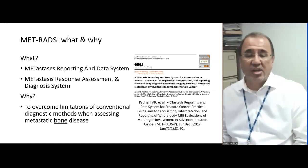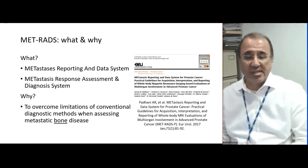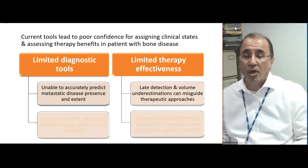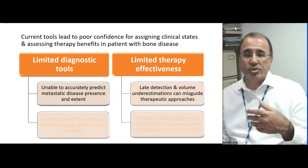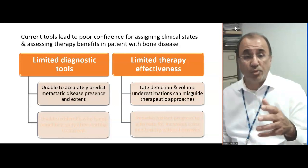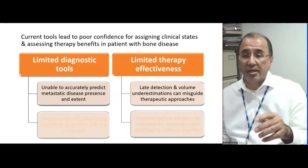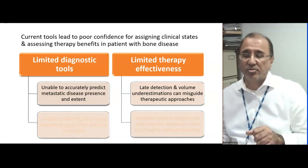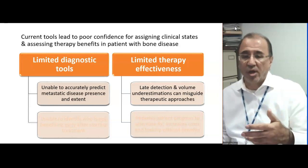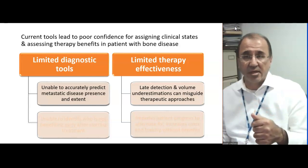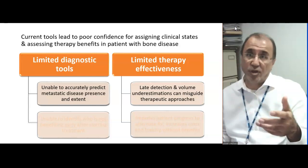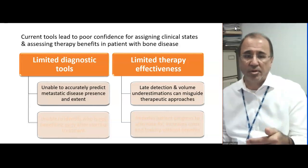Why do we need it? To overcome the limitations of conventional imaging when assessing patients with bone disease. Current imaging tools such as bone scans and CT scans lead to poor confidence in assigning the clinical states of patients and assessing therapy benefits if they have bone disease. We are unable to accurately predict the presence and extent of metastatic disease, and late detection and volume underestimation can misguide the therapeutic approach.